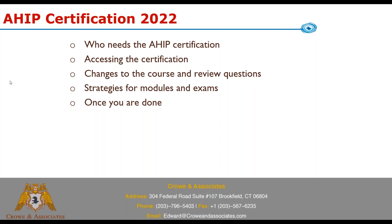A lot of people I know have their AHIP completed at this point. If you haven't, for AEP you have until basically the last day of September to do it, because technically to be able to market the 2022 plans — which you can do starting October 1st — you have to have AHIP completed and certs done. You can't take an app until October 15th, but you can't market the 2022 plans until your certification for any given company is completed.